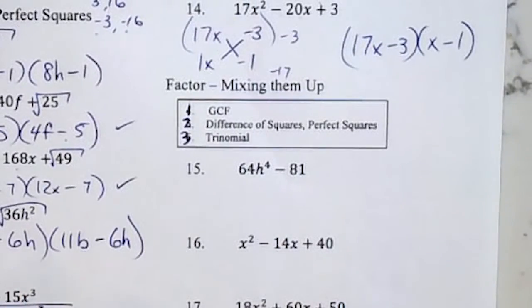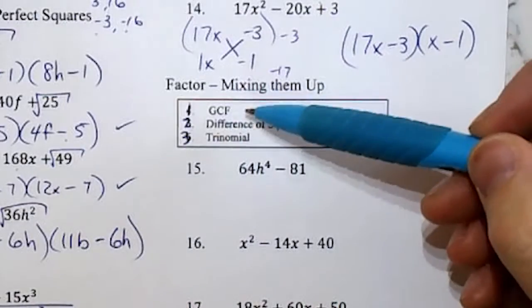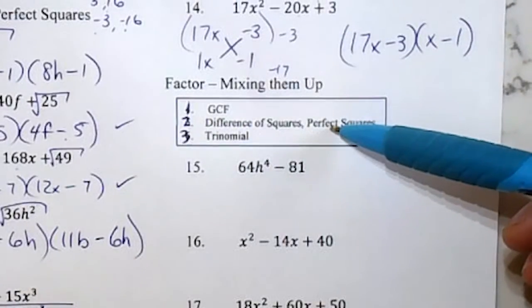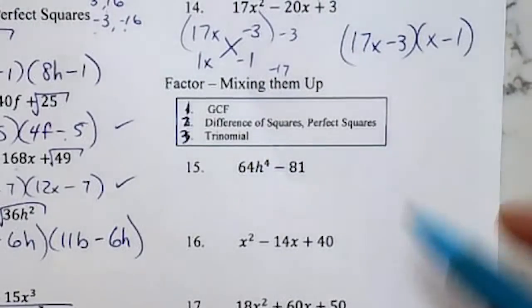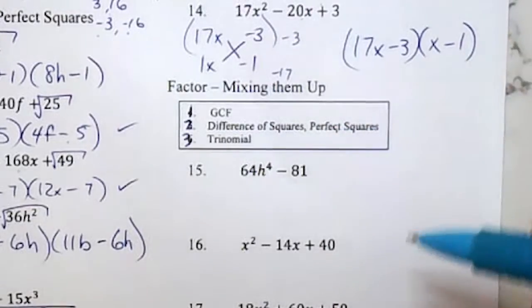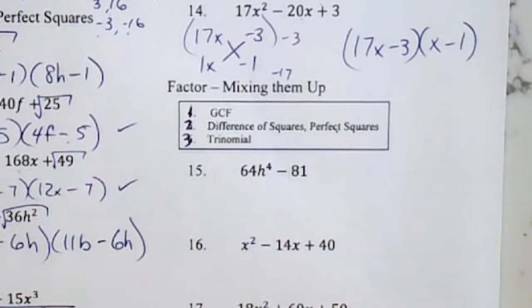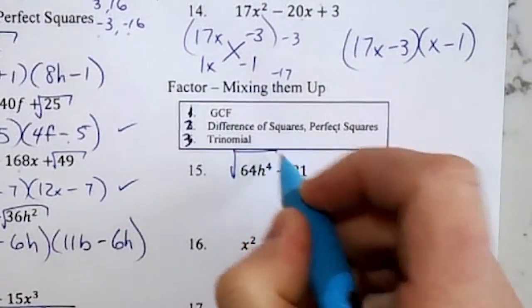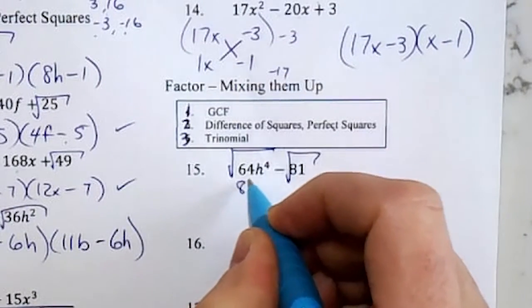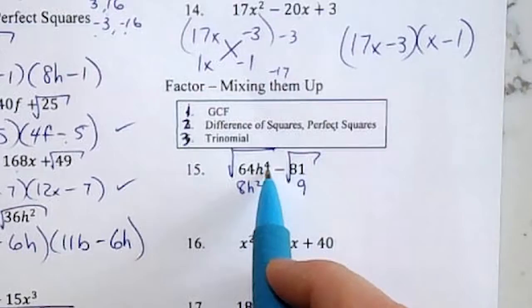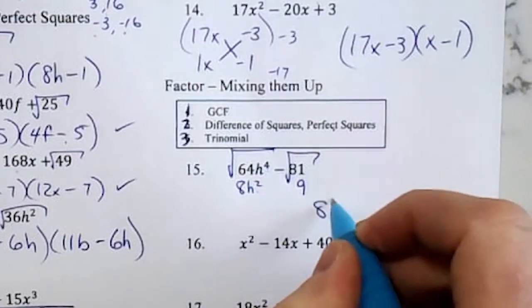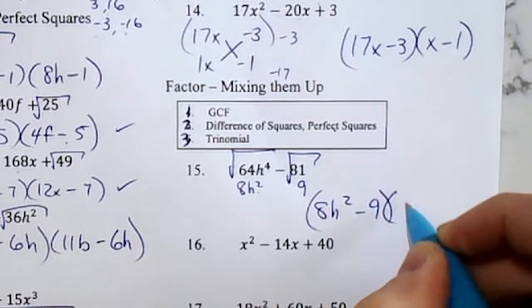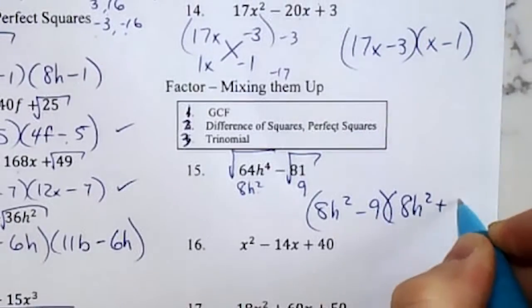Now these are all mixed up, so we have to actually think about what they are. Always go in order. Check for a GCF, then check if there's squares, then do the trinomial. The trinomial works for everything, but it's just that squares have a shortcut for those that do have it. So right away, GCF, there's nothing that goes into both. I see perfect squares. So careful, this is 4, so the perfect square, or the square root, is 8h squared. And we have to have one of each, 1 plus and 1 minus.